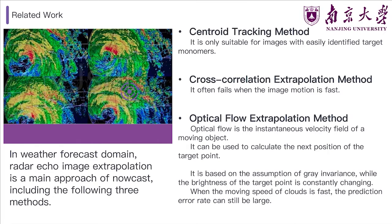However, the optical flow extrapolation method also has limitations on our cloud prediction. The optical flow method requires the image to follow the assumption of gray invariance. In fact, the brightness of the target point is constantly changing because actual cloud change with time is often accompanied by generation, development, weakening, and dissipation. As a result, when the moving speed of clouds is fast and the time interval is long, the prediction error rate of this method can still be large.